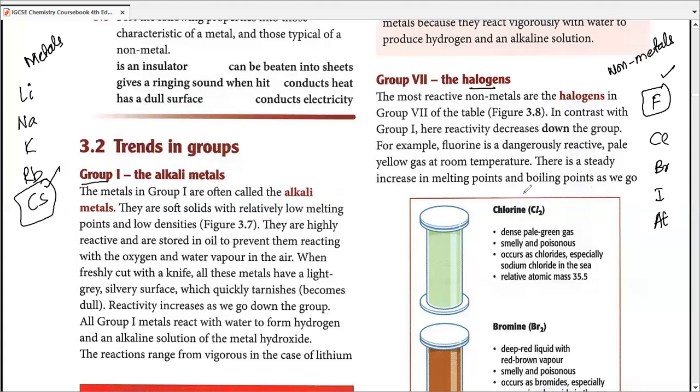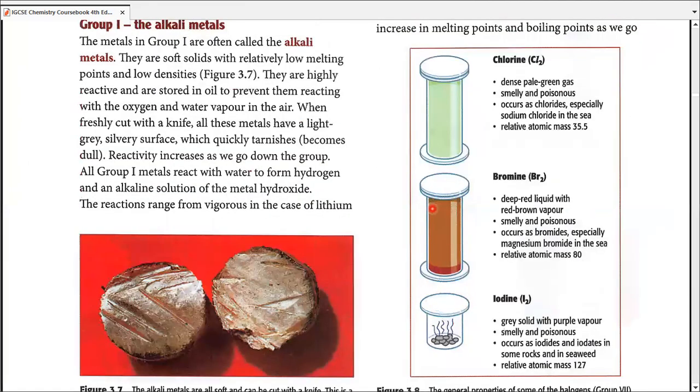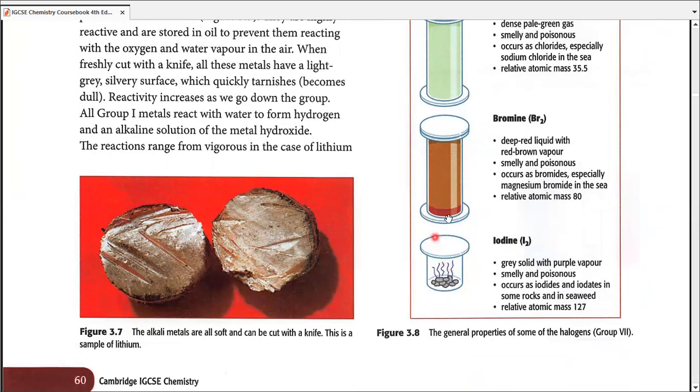We are going to go with some very basic observations about halogens, and those are a part which you need to memorize. For example, fluorine is dangerously reactive. It's a pale yellow gas at room temperature. Chlorine is a little dense, but it's pale green and it's poisonous. Bromine is a deep red liquid. It has red-brown vapor. It's also poisonous. Bromine was the only liquid non-metal at room temperature on the periodic table. Iodine is a gray solid which can easily sublime into purple vapors.